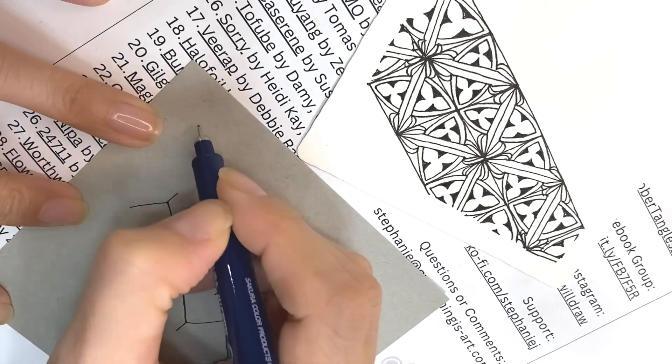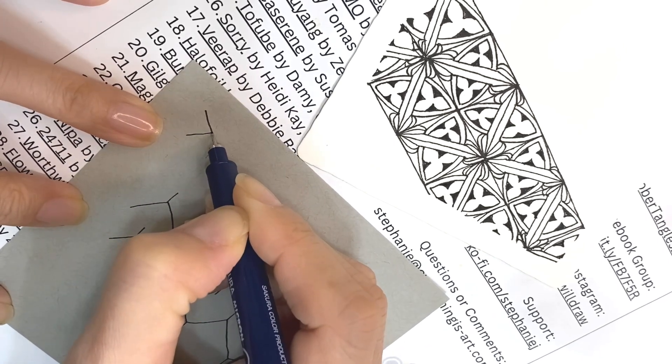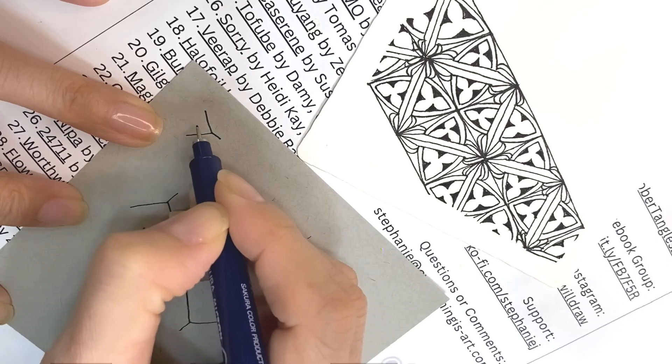So make sure you are adding like you have V shape, adding line this way, not this way. Okay.